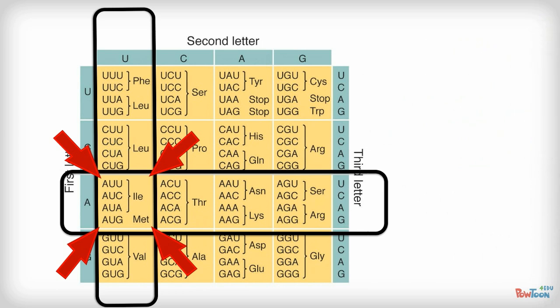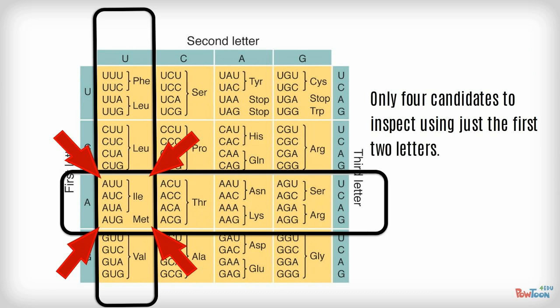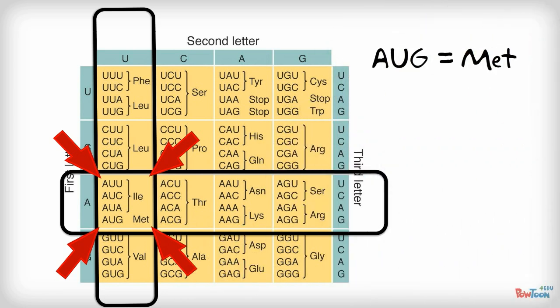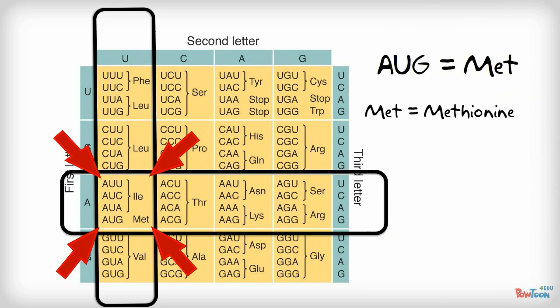We find one cell where all the codons start with the two letters AU. There are only four codons in this cell: AUU, AUC, AUA, and AUG. Our codon is AUG, and the amino acid next to it is abbreviated MET. MET stands for the amino acid methionine. So the amino acid corresponding to the AUG codon is methionine.